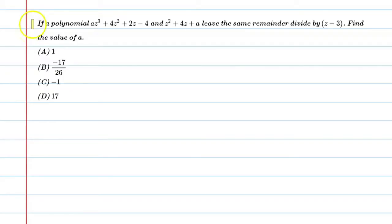Hello students. Let's solve this question. If a polynomial az³ + 4z² + 2z - 4 and z² + 4z + a leave the same remainder divided by z - 3, find the value of a.